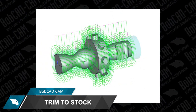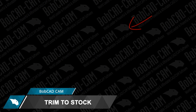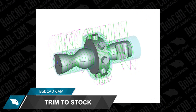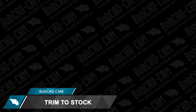Before using Trim to Stock, additional air cutting moves could be generated when roughing with your 4th axis. As you can see, after using Trim to Stock, less tool motion is created, resulting in shorter cycle times.